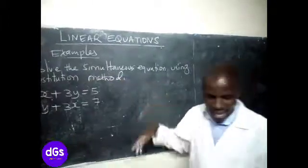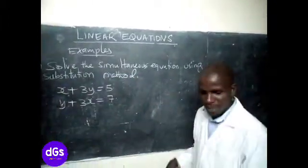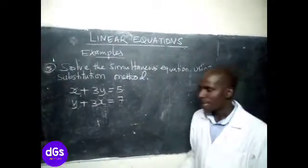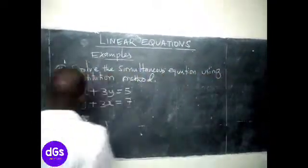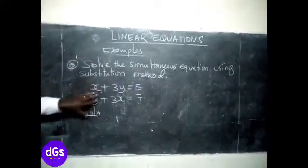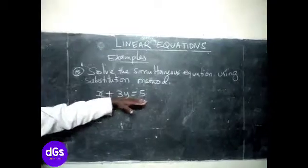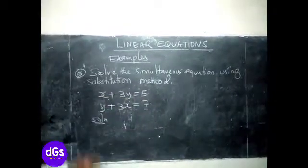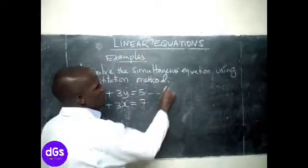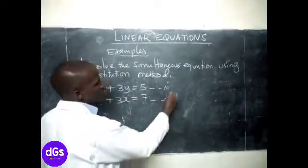So we are going to see how we solve this problem using substitution method. Now, in the substitution method, you usually pick, express one of the equations in terms of the other, and whatever you do, substitute it in the next equation. Now, taking this one as our equation one, and this one is our equation two.